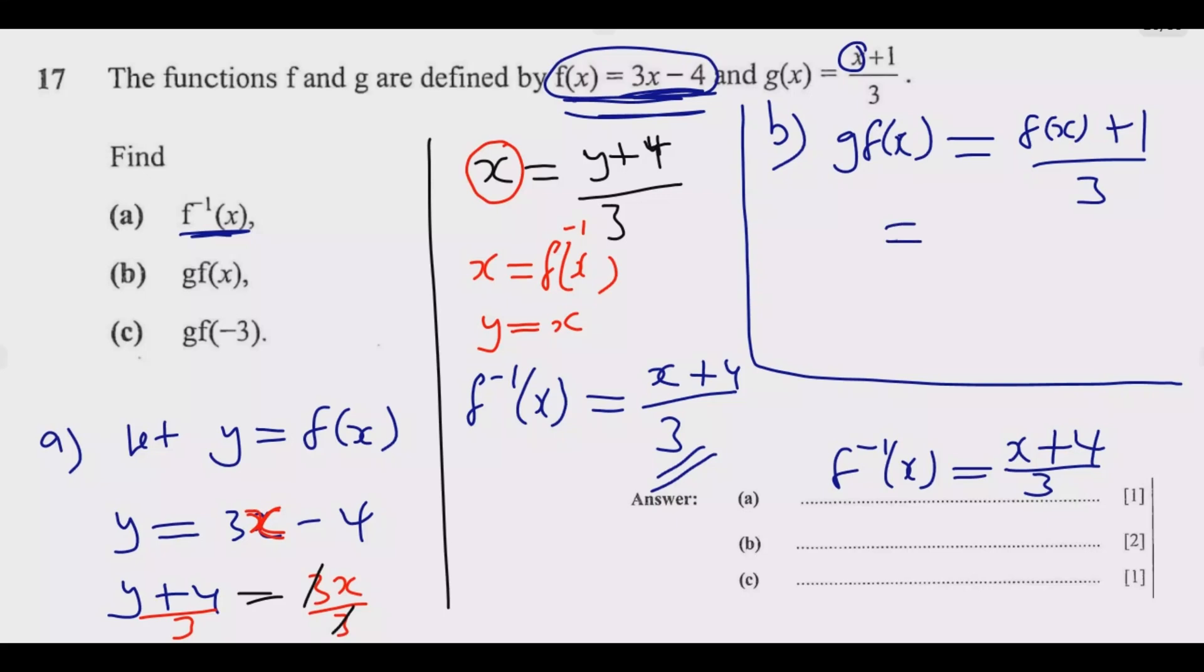This becomes 3x, let me use a different color so you're able to see clearly. It will be 3x minus 4, then plus 1, over 3. This is replacing f(x), which is replacing the x value here.